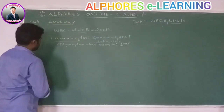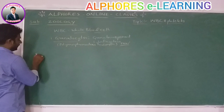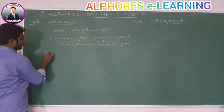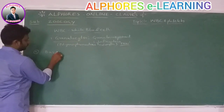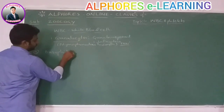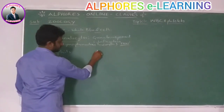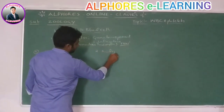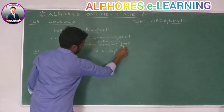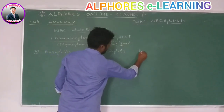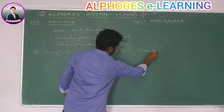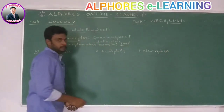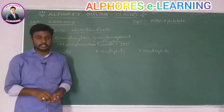Three types of granulocytes are present: basophils, acidophils, and neutrophils. These are the three types of WBC granulocytes.